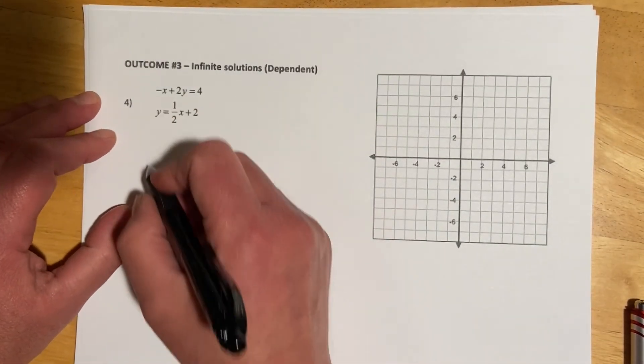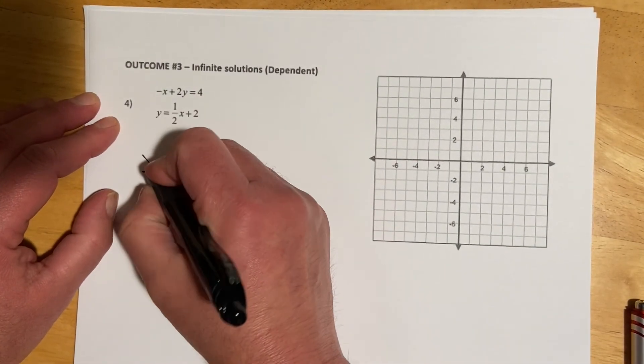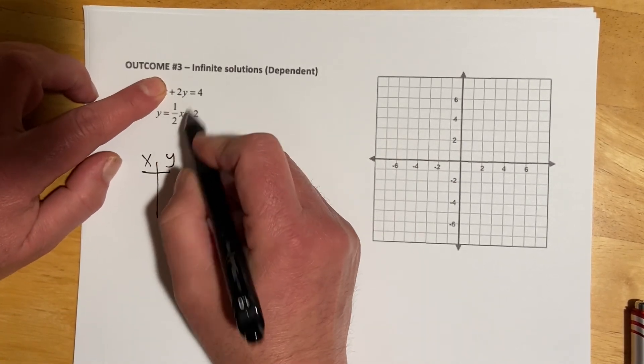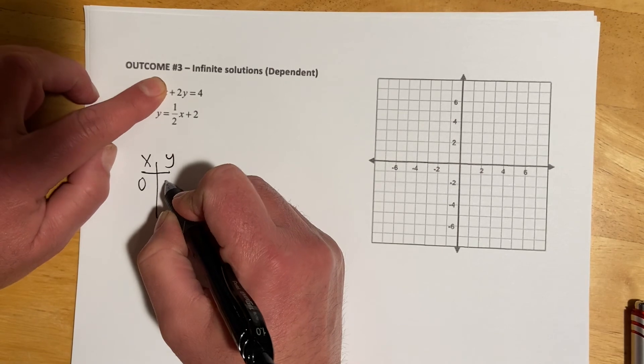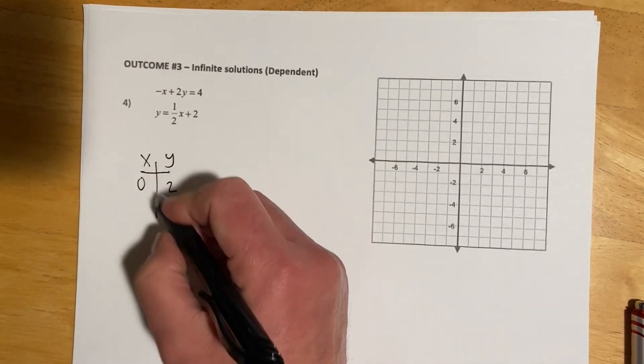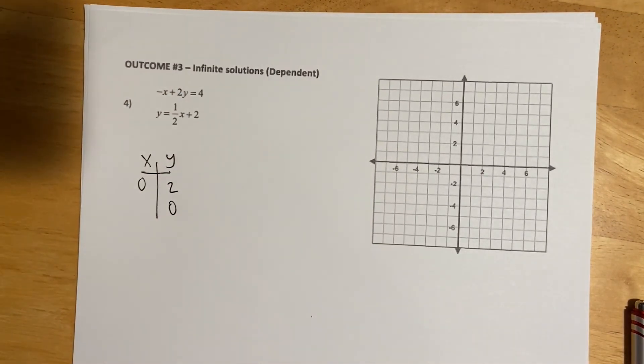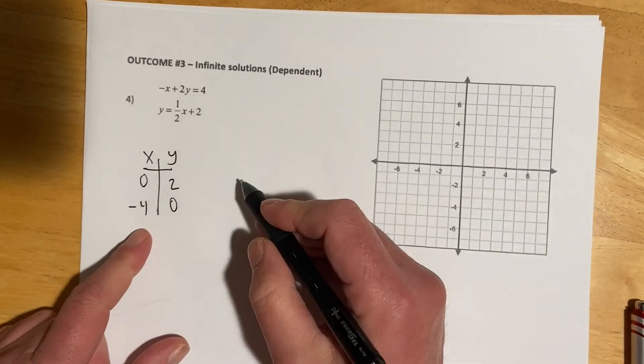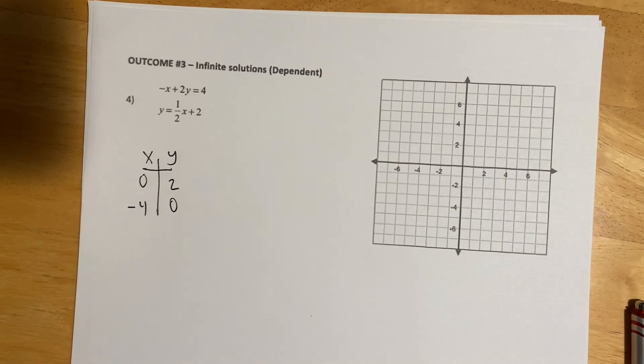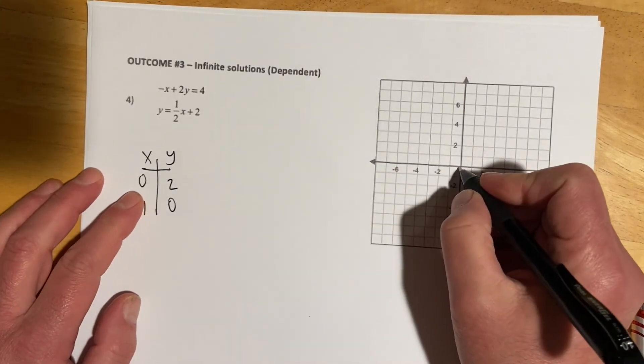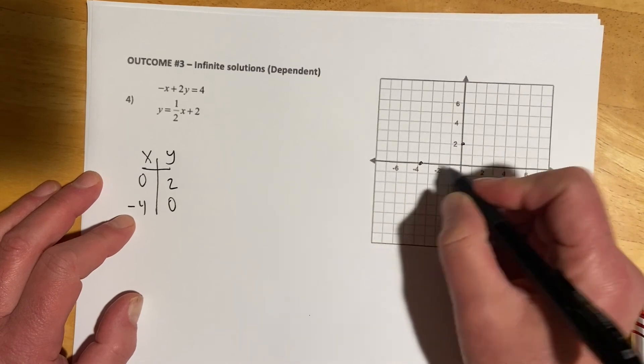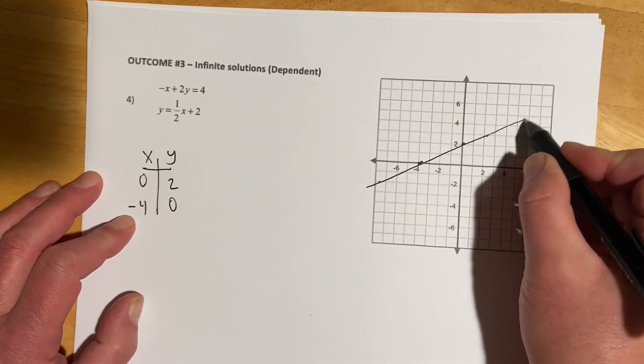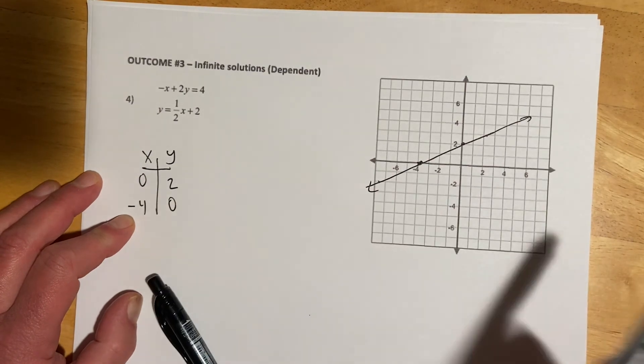And then this last one, for the one that's in standard form, I'll just use the intercepts. So if x is 0, 2y equals 4. So y would have to equal 2. And then if y was 0, negative x equals 4. So x equals negative 4. So that is cat hair. So let's do x is 0, y is 2, and then negative 4, 0. So that would be right like that.